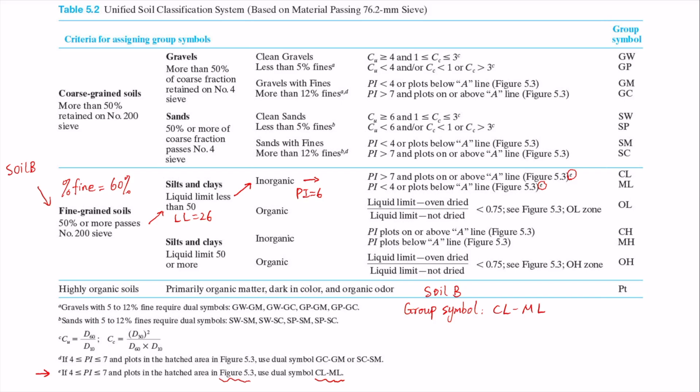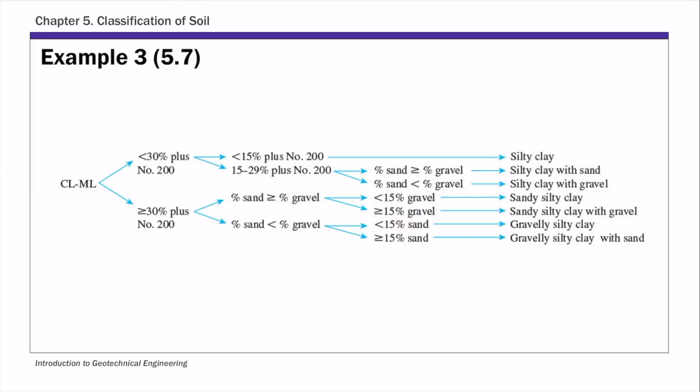Then for group name, we're going to use that group name figure. So we start from that CL-ML. That's a group symbol we just found. And then the next condition here, that's the percent of plus number 200. Again, plus number 200, that basically means it's larger than number 200, or the particles are retained on or above number 200. So this basically refers to the coarse-grained soil.